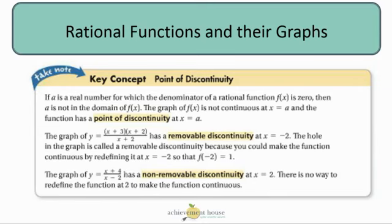There's removable discontinuity, which means that if, say for example, we have the graph of y equals (x+3)(x+2) all over (x+2), we see that the denominator would equal zero at x equals negative 2. So that's our point of discontinuity. However, we can rewrite the function because the numerator and denominator have a common factor, which is x+2.